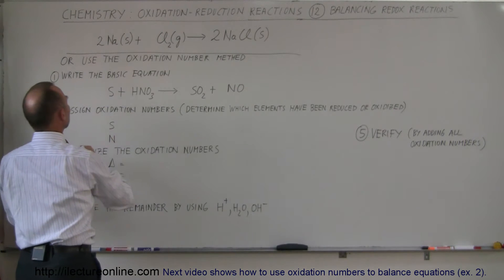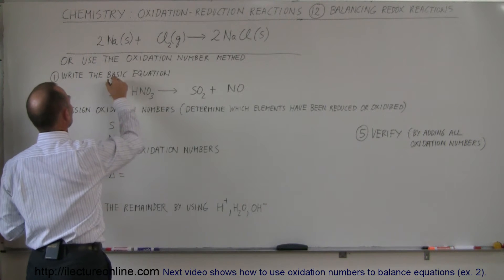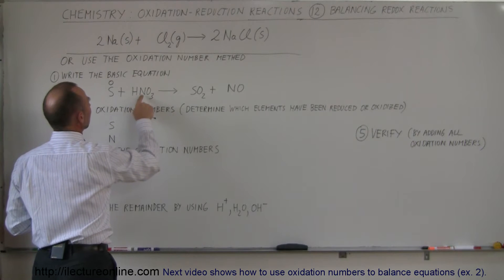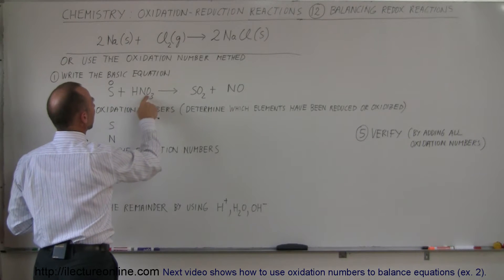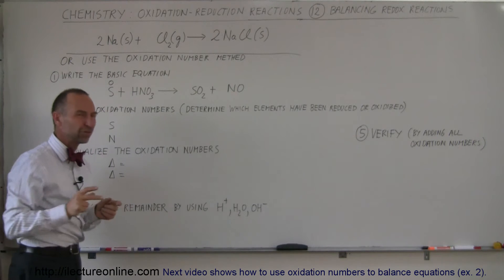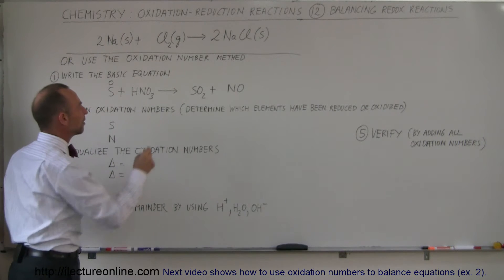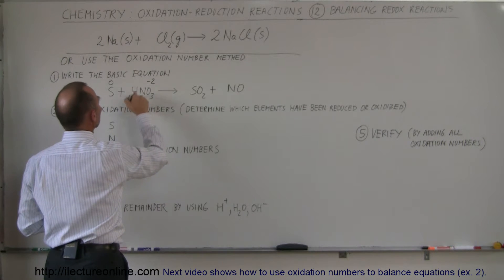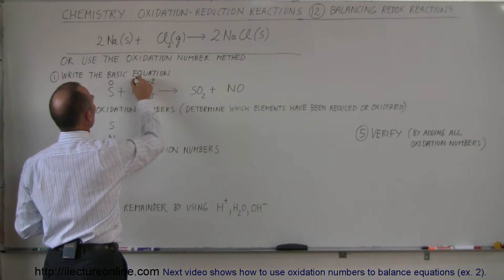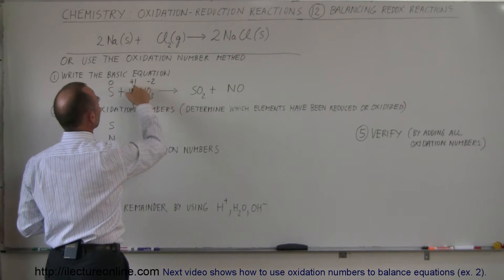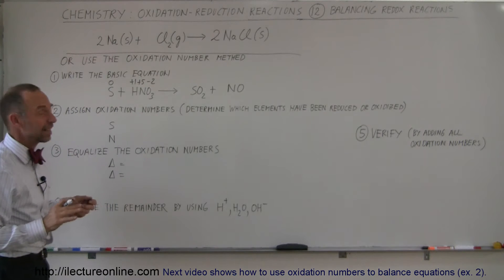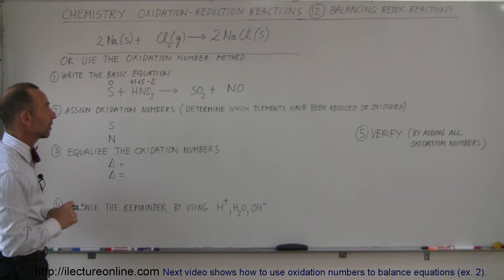Here we have sulfur in the oxidation state zero. We have hydrogen, nitrogen, and oxygen. Typically oxygen will be at minus two and hydrogen will be plus one. That's minus six plus one, which leaves plus five for nitrogen. That's the most likely state, and that's what it is for nitric acid.